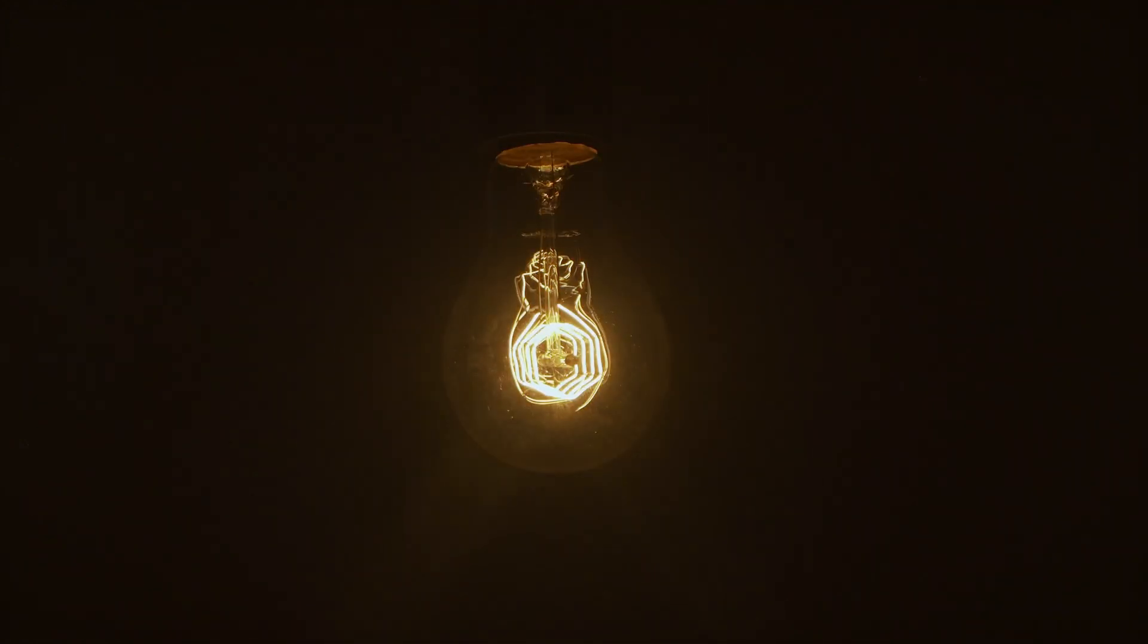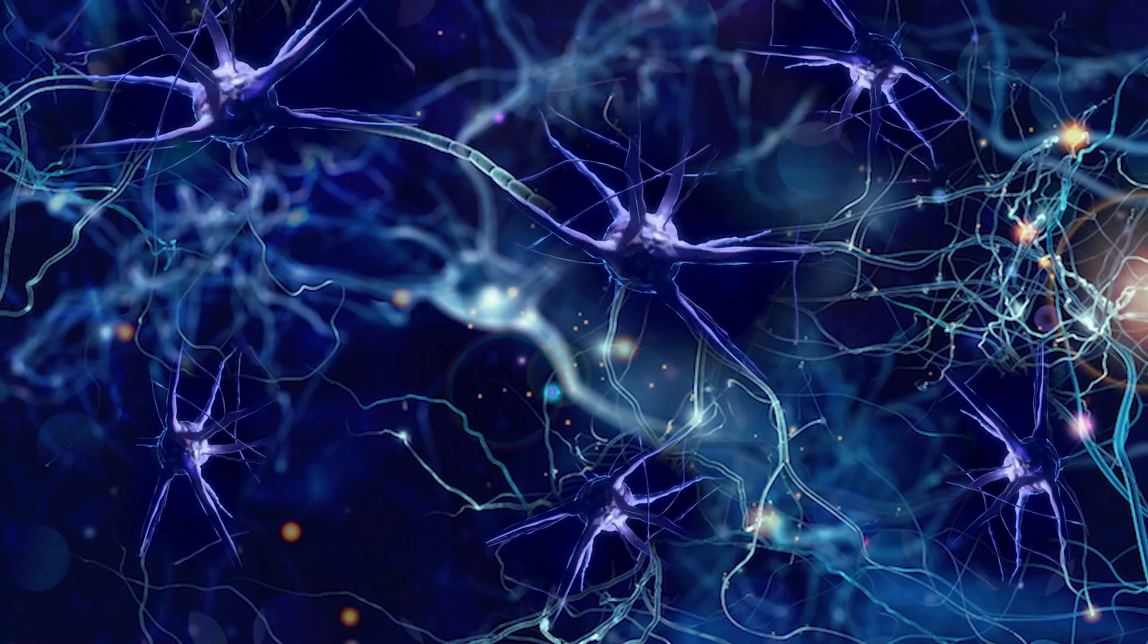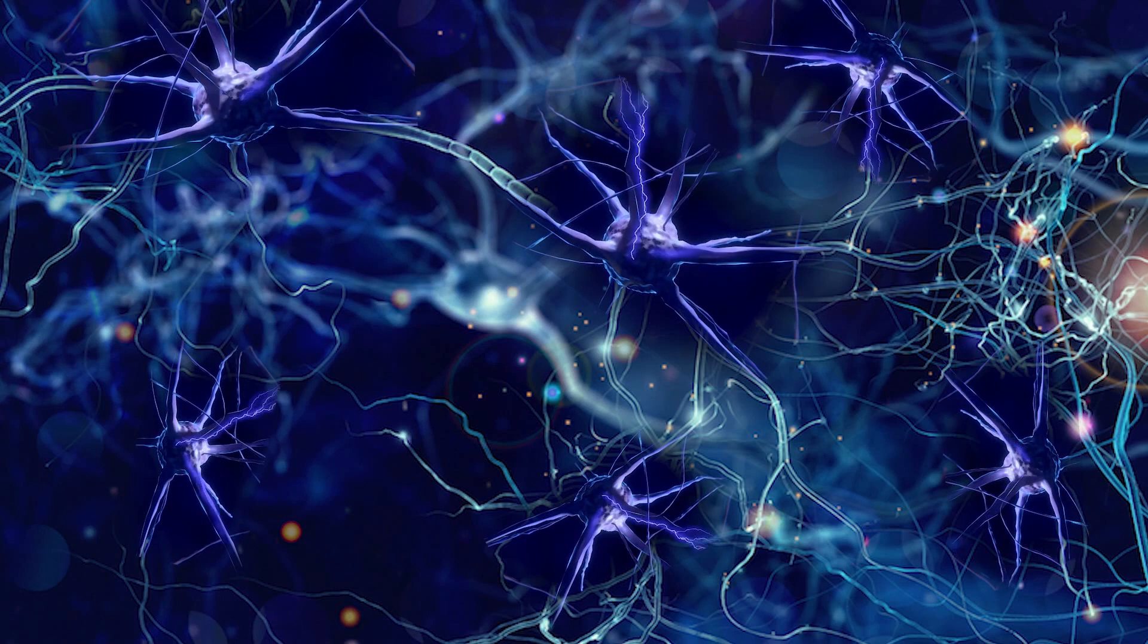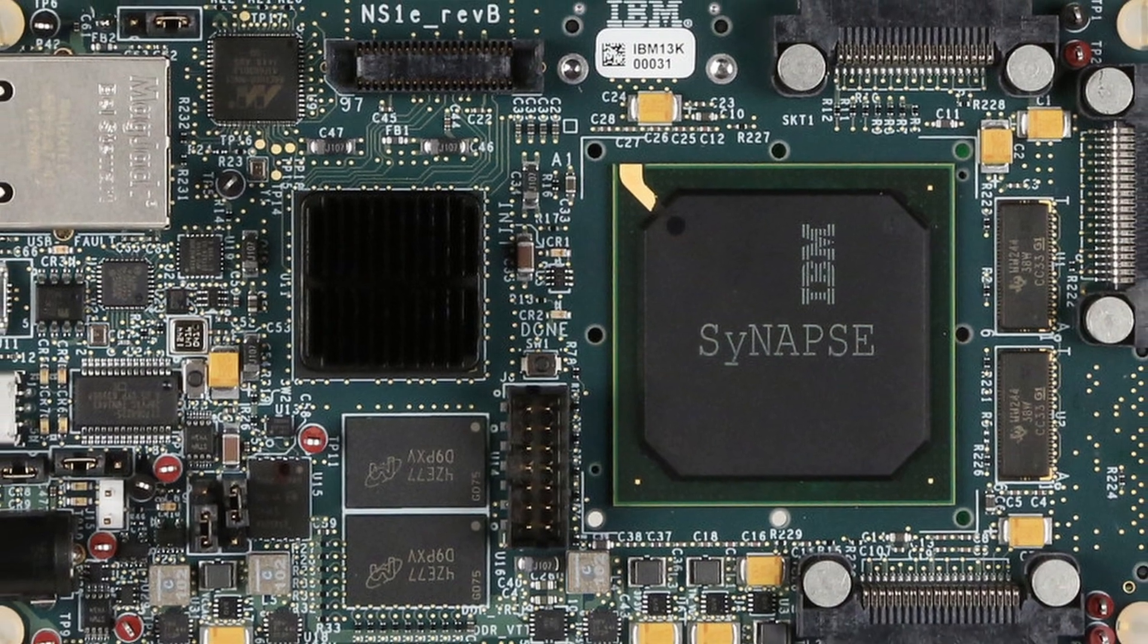But here's the thing, the human brain doesn't have this problem. Despite being incredibly powerful, the human brain consumes less power than a light bulb. So how does it achieve this? The answer lies in neuromorphic computing.